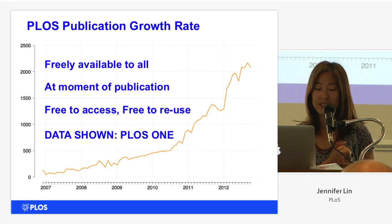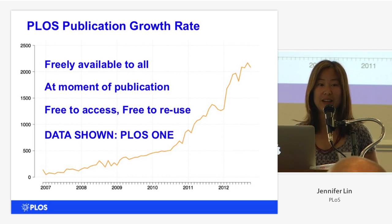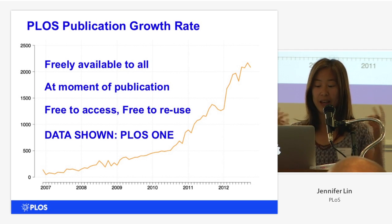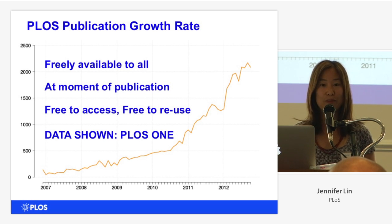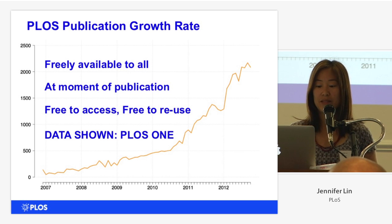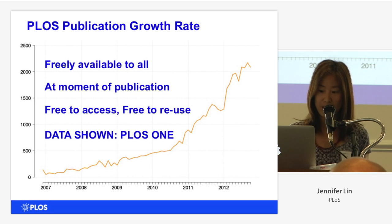I'm going to copy Paolo's opening gambit and offer some numbers to corroborate his claims that science is big and growing. I'm from PLOS, the Public Library of Science, an open access research publisher of biological and medical research. All of our content is freely available to all at the moment of publication — free to access, free to reuse.